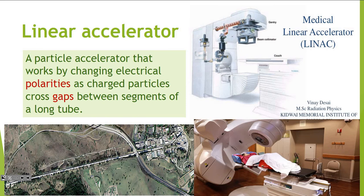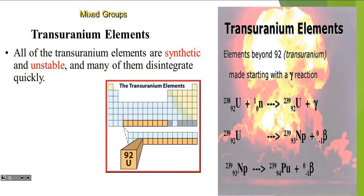Some linear accelerators used in medicine can actually accelerate particles and use radiation to kill cancers. A particle accelerator works by changing electrical polarities as charged particles cross a gap. The one in California is about 18 miles long in a straight path. There's also the Hadron Collider in Europe that goes through several countries — it's a big circle that takes the energy of all those countries to run, and has to be run at almost zero degrees Kelvin. Transuranium elements — past uranium — are all man-made, synthetic, and unstable, so they're all radioactive.